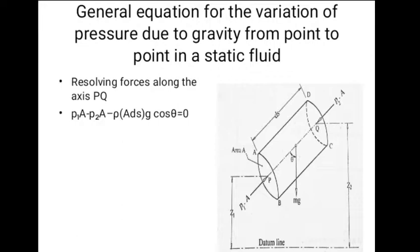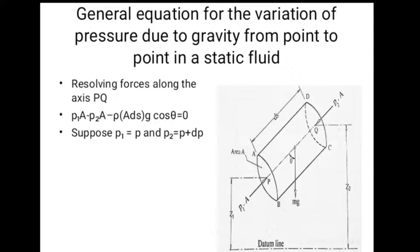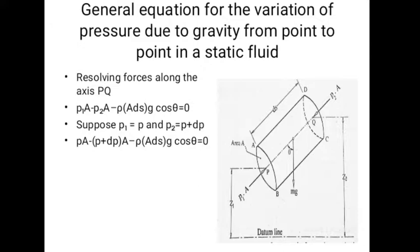Resolving forces along the axis PQ, we get P1A minus P2A minus Rho A Ds G cos theta equals zero. Now suppose P1 equals P and P2 equals P plus Dp, because P2 is higher than P1, so pressure at P2 would have increased by an amount equal to Dp. Putting the values of P1 and P2 in the above equation, we get PA minus (P plus Dp)A minus Rho A Ds G cos theta equals zero.